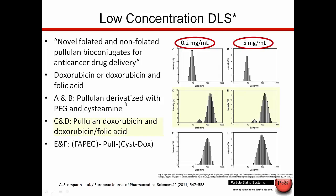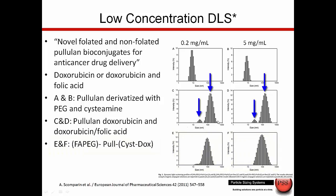Then for the conjugate of the poliulin polymer and doxorubicin, there's also data for a more complex system with excellent data at very low concentrations and the ability to detect these bimodal distributions. This is excellent NICOMP data being used by our customers in creating this kind of complicated bioengineered particle.